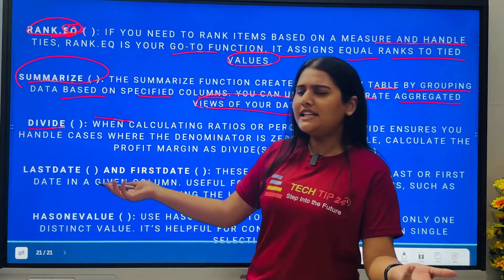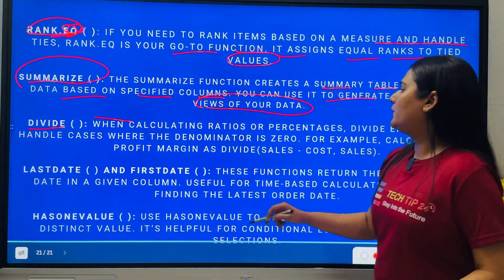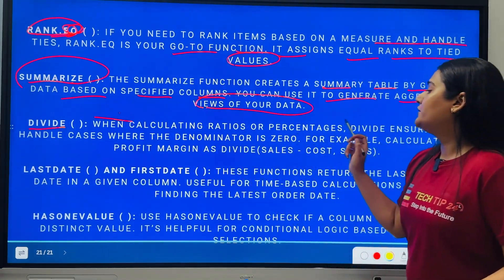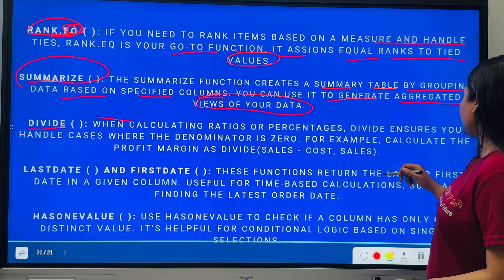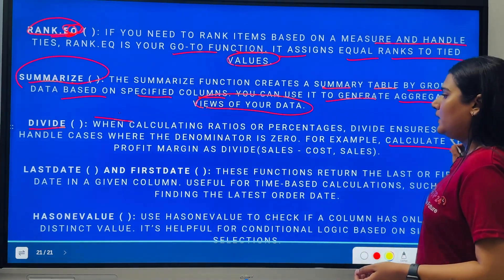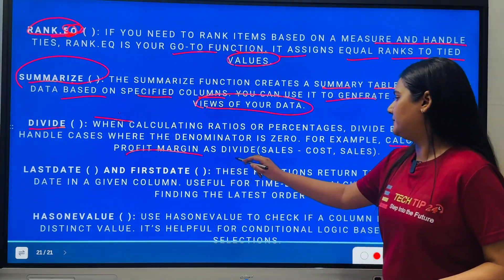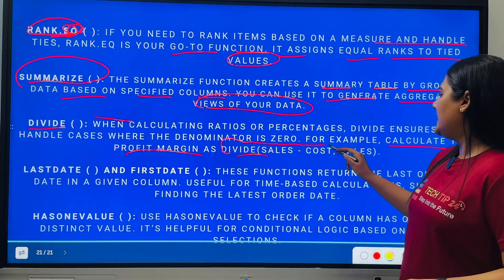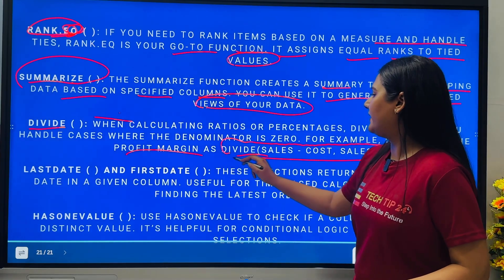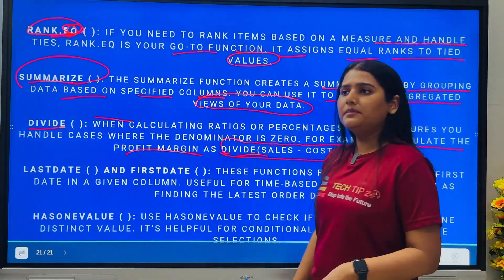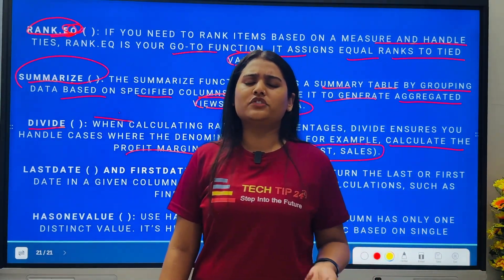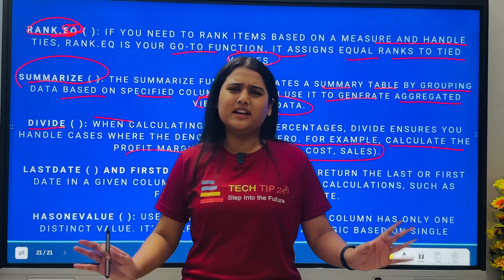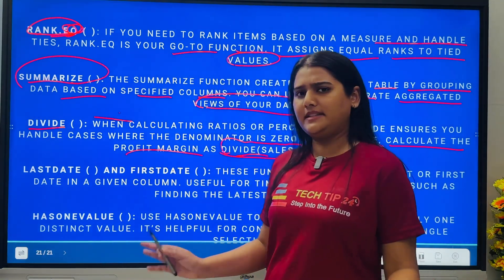Then we have DIVIDE. As the name suggests, when calculating ratios or percentages, DIVIDE ensures you handle cases where the denominator is zero. For example, to calculate profit margin you can write DIVIDE(Sales minus Cost, Sales). Sometimes in an interview, if the DAX syntax is short, you can just say it verbally. DIVIDE is one of the easiest DAX functions to explain.